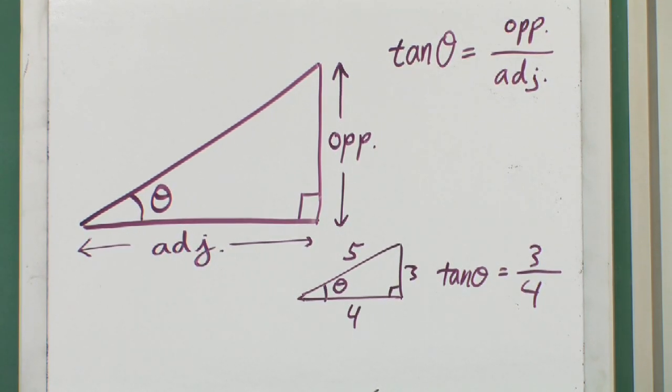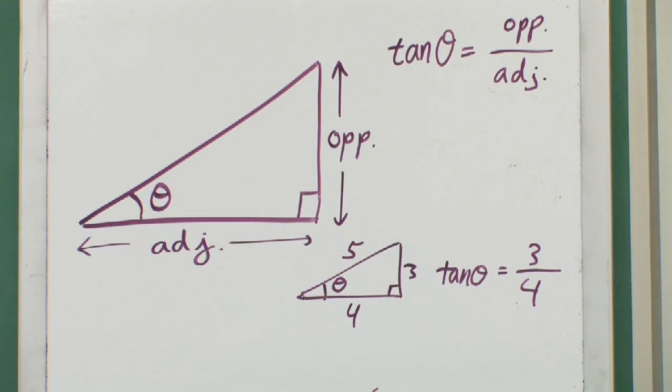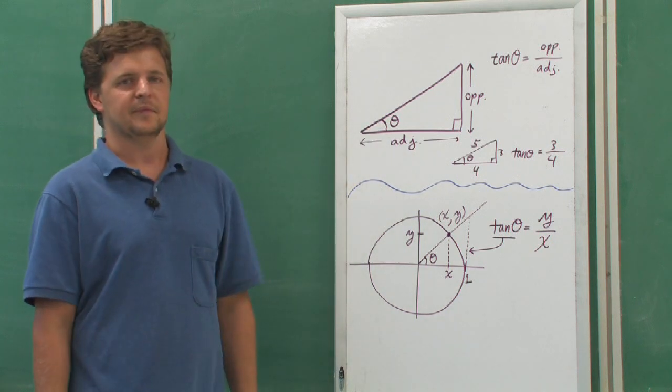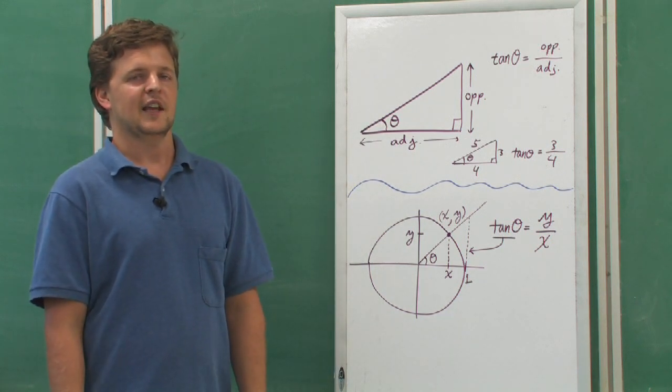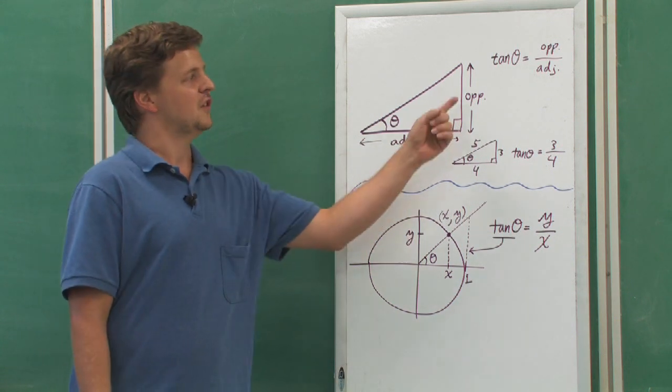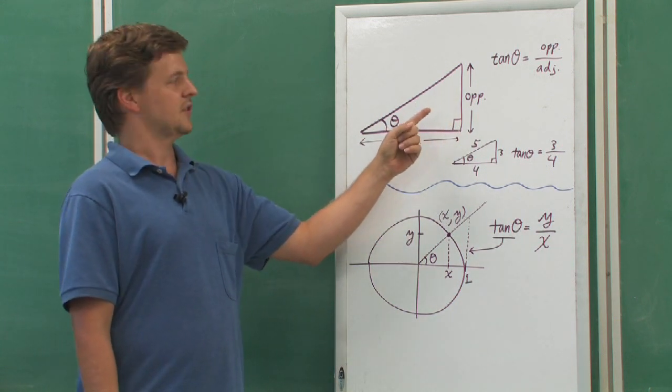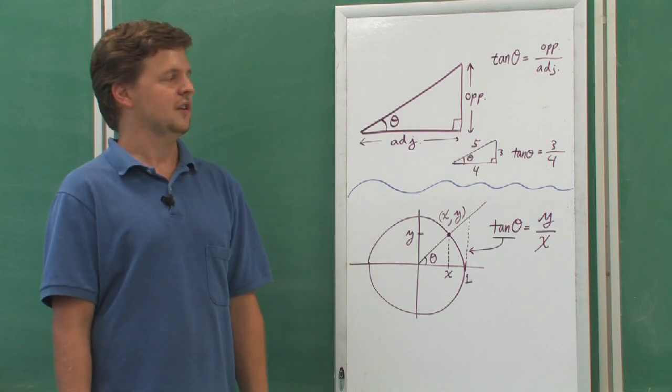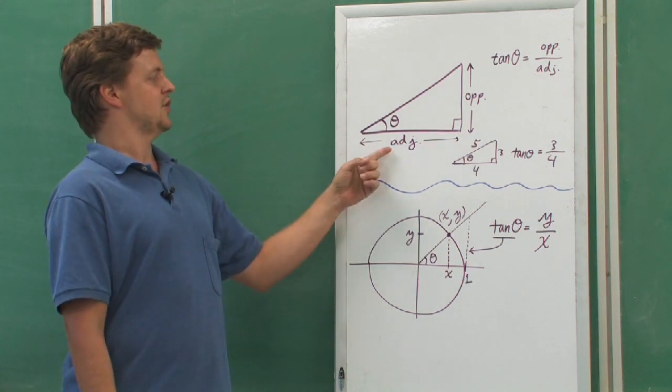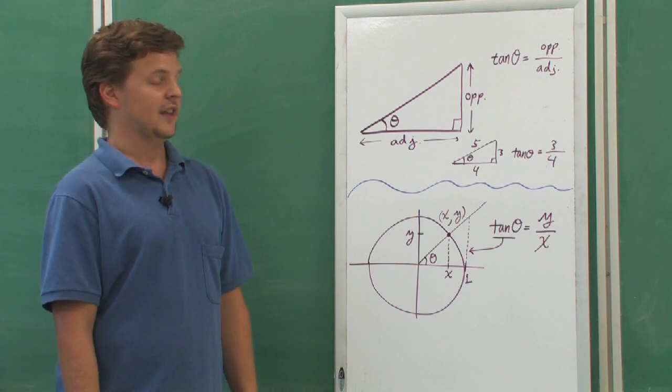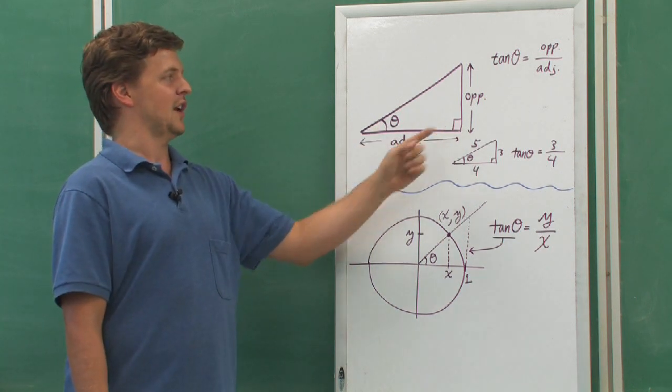we can always find the tangent of one of the other angles. Here I'm going to call the other angle theta. Tangent of theta is defined to be the ratio, or the fraction of the two lengths, the opposite length of the side from theta, and the length of the adjacent side to theta. That's the one that theta shares with the right angle.